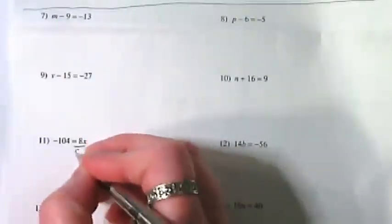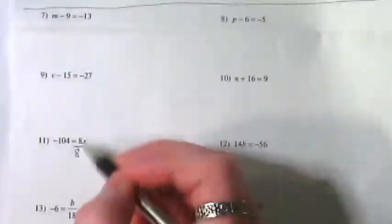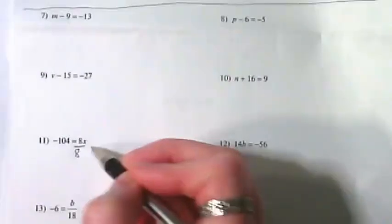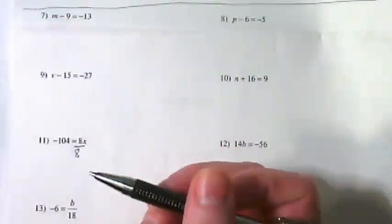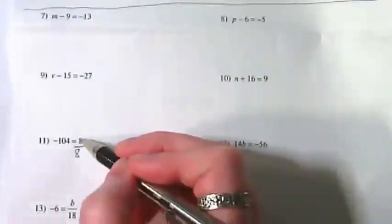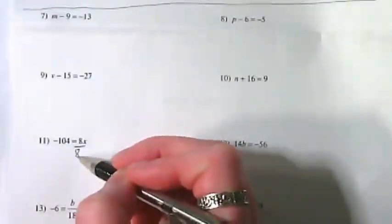And we talked about we want to divide this by eight because the x is on the side of the equal sign with the eight. The eight's being multiplied by the x. And when I divide eight by eight, I get a one.